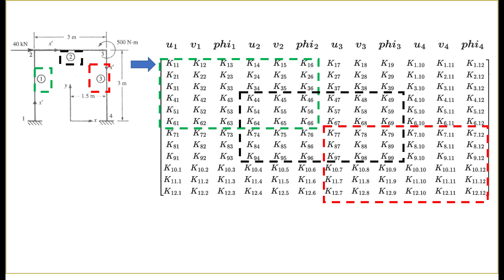Each of the three elements has its own local stiffness matrix. The global stiffness matrix is created by superimposing the local stiffness matrices onto it. Element 1 has nodes 1 and 2; each node has a displacement in x, displacement in y, and an angle of deflection phi. Some nodes are shared by multiple elements — node 2 is shared by elements 1 and 2 — so we superimpose the last three rows and columns of element 1's local matrix onto the first three rows and columns of element 2's local matrix.